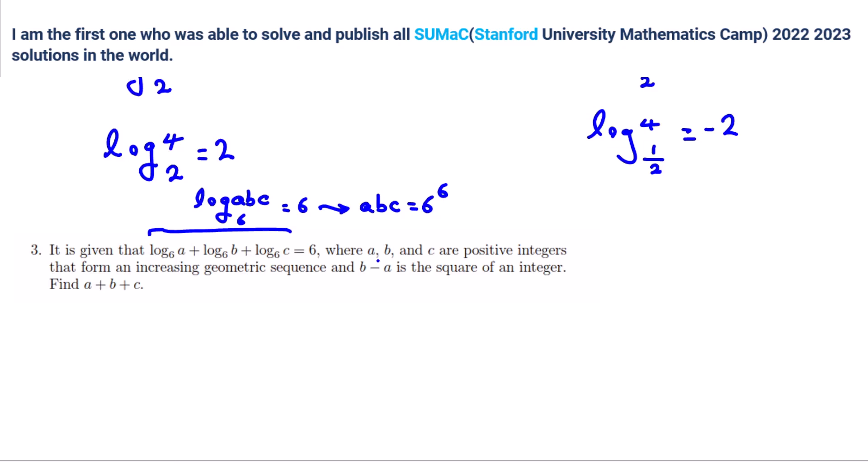Oh, 6 and 6. Yeah. Okay. Now, from here, we don't need these logs, okay? ABC is 6 to the 6 and ABC are positive integers form an increasing geometric sequence. B minus A is what? One more hint or that's enough?